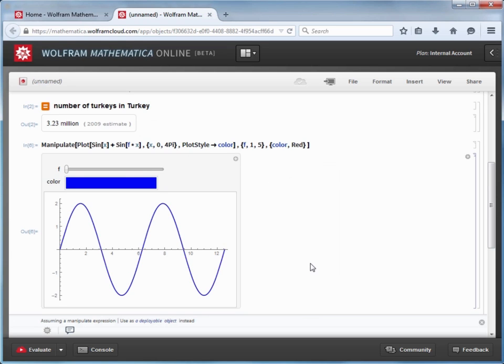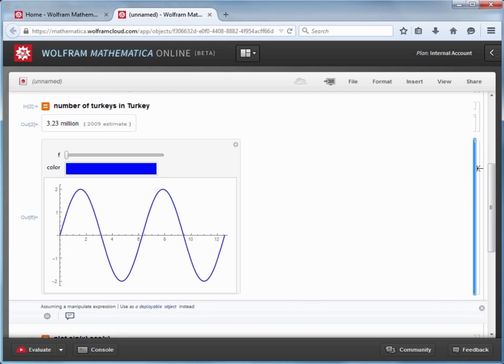Just like in Mathematica on the desktop, the notebook structure can be organized by moving cells around through cutting or copying and pasting. And the cell contents can be hidden or displayed by double-clicking the appropriate cell brackets. So if I want to show my results but not the actual code, I can hide it, like for this last manipulate example I just created.